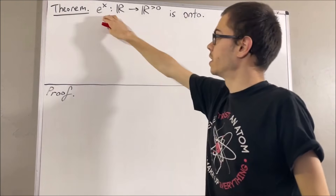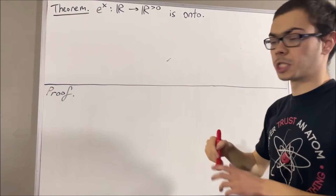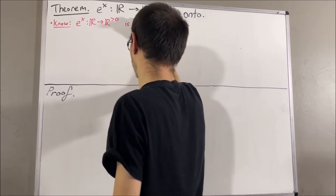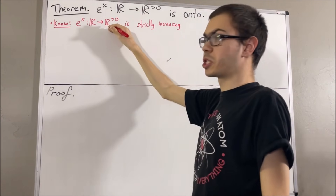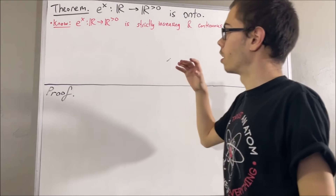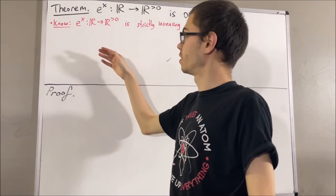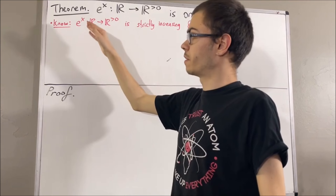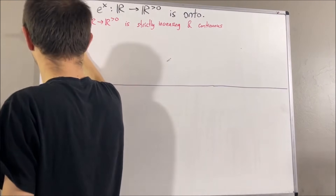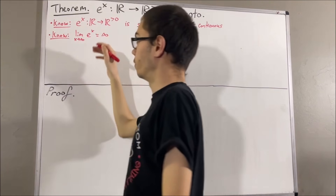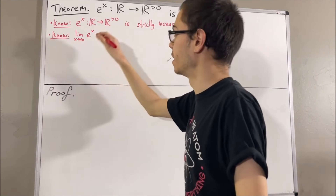Another thing we proved was that the exponential function is a strictly increasing function. We also proved that the exponential function is continuous. And some other things we proved were limits: we proved that the limit as x approaches infinity of e^x equals infinity, and we proved that the limit as x approaches negative infinity of e^x equals 0.